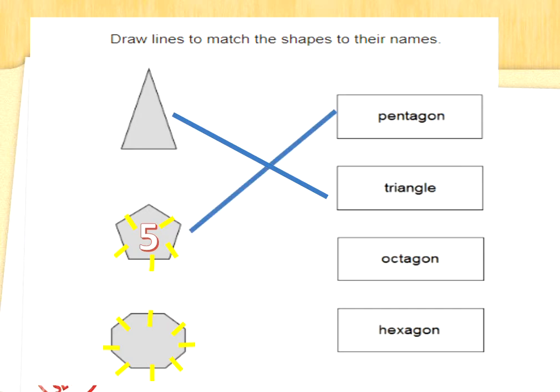We've got one shape left and two words left — octagon and hexagon. Let's count the sides of this bottom shape: one, two, three, four, five, six, seven, eight-sided. An eight-sided shape — is it an octagon or a hexagon? Like an octopus has eight legs, an octagon has eight sides. Well done. And you don't need to do anything with the word hexagon — we just need to leave it.